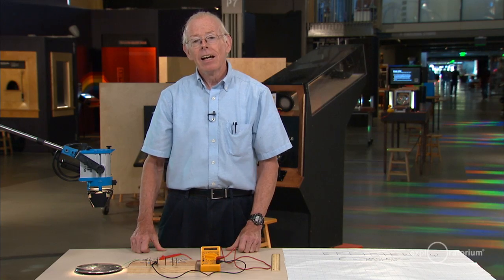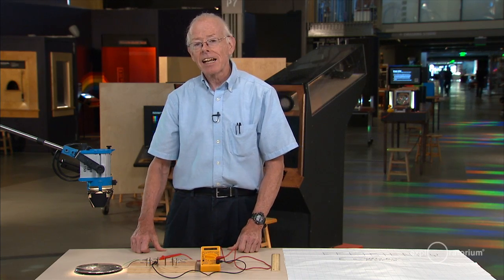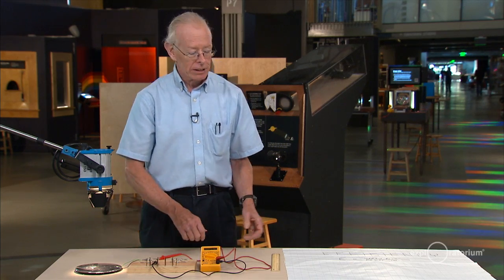Now the sun is much brighter. And when I measured the sun, I measured 4.5 volts of voltage and 3 tenths of an amp of electric current flowing through. Now from those two numbers, I can calculate the power coming out of this solar cell.